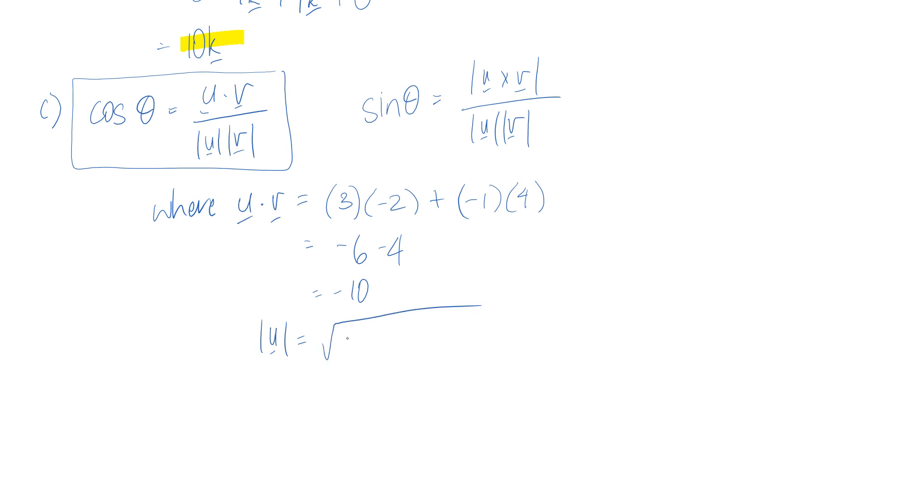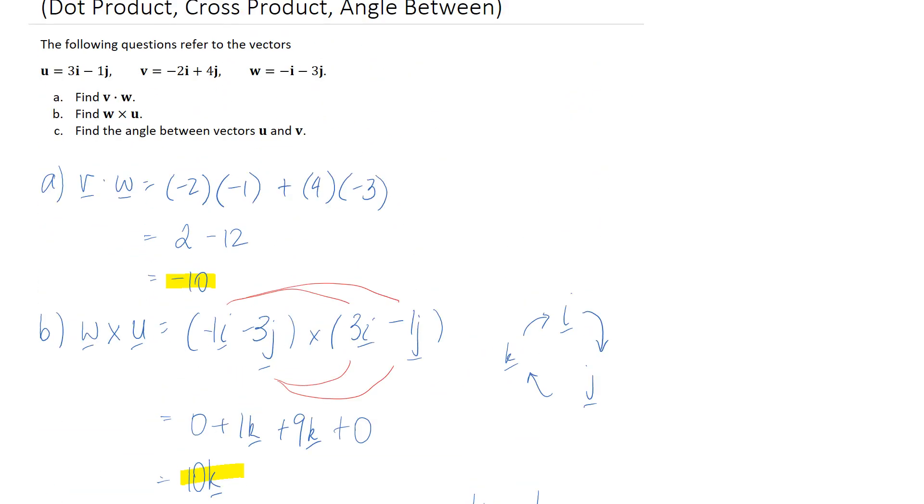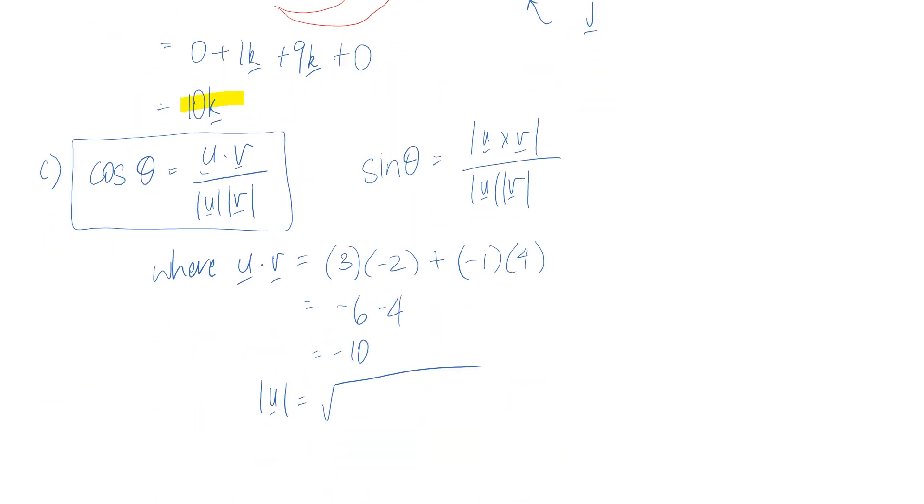So for the magnitude remember we take our components square them and add it together and then take the overall square root. So for the magnitude here our components are 3 and negative 1. That means we do 3 squared and negative 1 squared here.